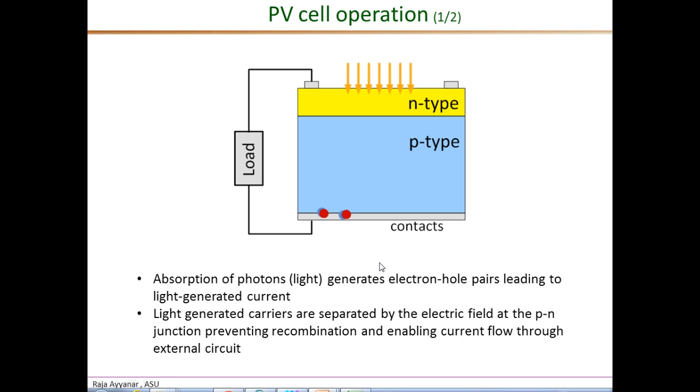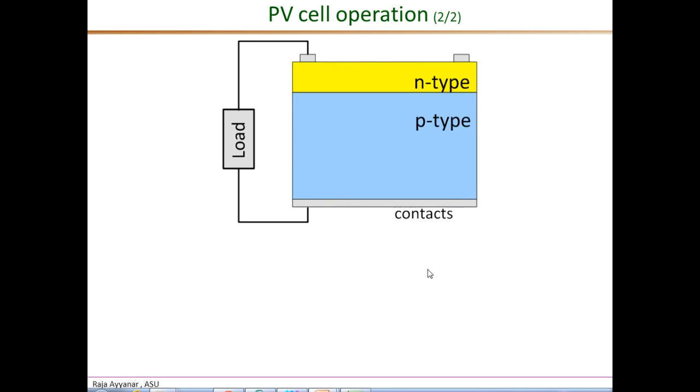So we have seen the first two requirements having been met. The first one is the creation of these charge carriers, electron and hole pair, by absorbing the photon energy. And the second one is the separation of charges enabling the movement of the charge carrier, the electron, through the external circuit. And the third requirement is a large enough voltage to produce power at the load.